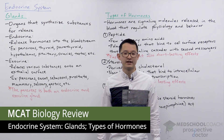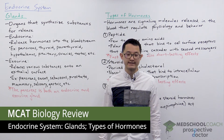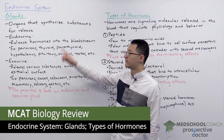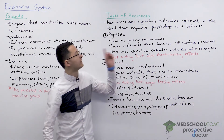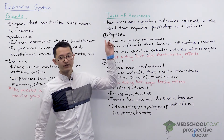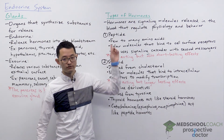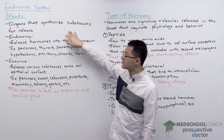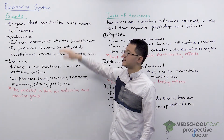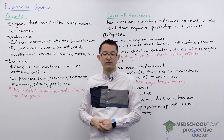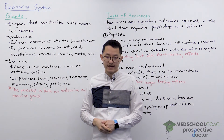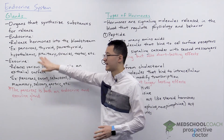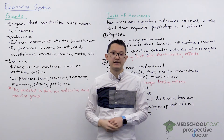In the next few videos we're going to cover the endocrine system. This video is going to cover glands as well as the different types of hormones. First of all, glands are organs that synthesize substances for release. There are two different types of glands: endocrine glands and exocrine glands.